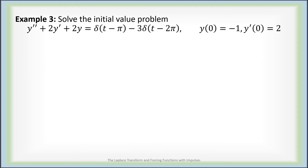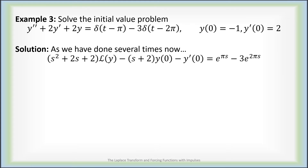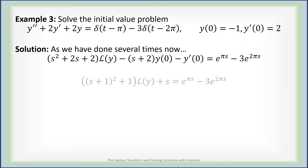As our third example, let's solve: y double prime plus 2y prime plus 2y equals an impulse at time pi minus 3 times an impulse at time 2 pi, with initial values y of 0 is minus 1 and y prime of 0 is 2. We take a Laplace transform of both sides. On the left we end up with (s squared plus 2s plus 2) times the Laplace transform of y, with (s plus 2) times y of 0 and y prime of 0 being subtracted. On the right, the Laplace transform of the impulse at pi is e to the minus pi s, and at 2 pi it's e to the minus 2 pi s.